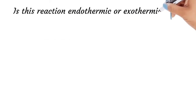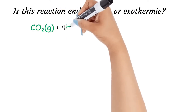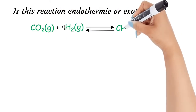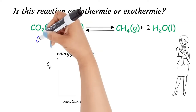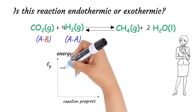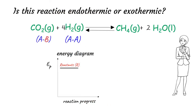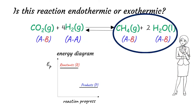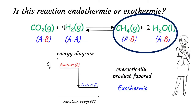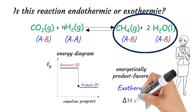Our next example is the reaction between carbon dioxide gas and hydrogen gas, producing methane gas and liquid water. Here, the reactants have a combination of stronger AB bonds and weaker AA bonds with higher potential energy, while all the bonds on the product side are stronger AB bonds with lower potential energy. Therefore, we can expect the products to be more energetically stable than the reactants. Thus, we can predict that this reaction is energetically product favored — in other words, exothermic — with a negative delta H value.